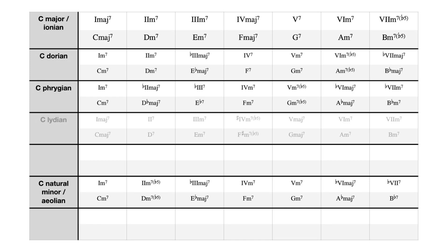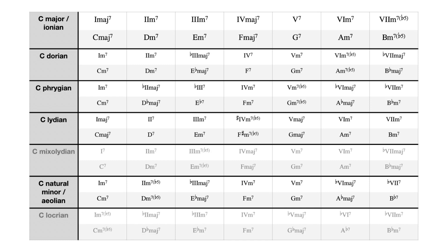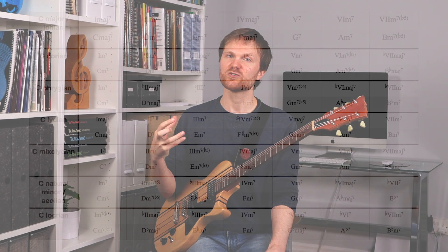So Dorian, Phrygian, Lydian — all of those are available to us and it's still modal interchange. You can really experiment to find your own sound with this stuff, and I encourage you to. There's a link in the description to a PDF so you can experiment and find which progressions you really identify with and like, so you can incorporate them in your songwriting.